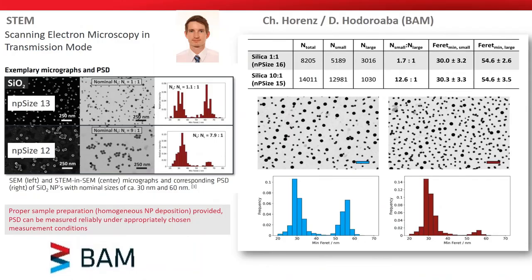The scanning electron microscopy measurements were achieved at BAM in Germany by Christoph Lorenz and Dan Odo-Ruaba. This shows the image and the estimated polydispersity for silica particle mixtures NP size 12 and NP size 13.